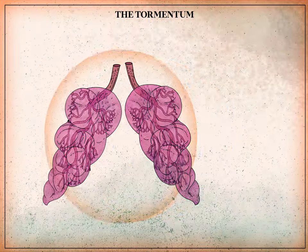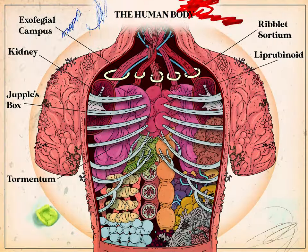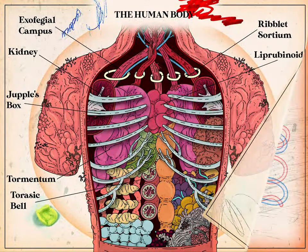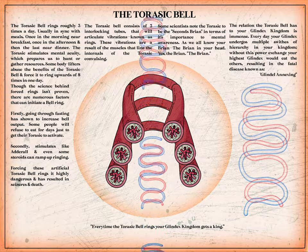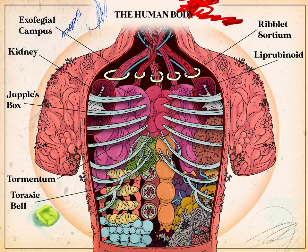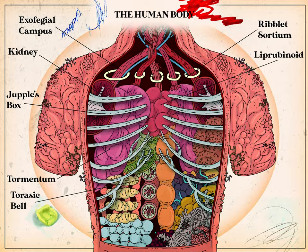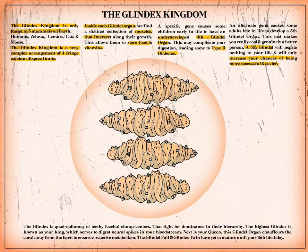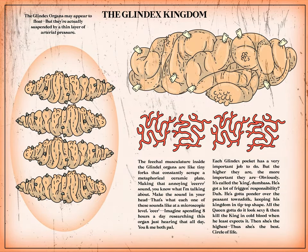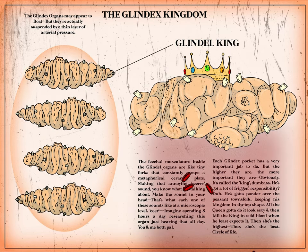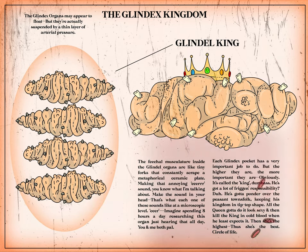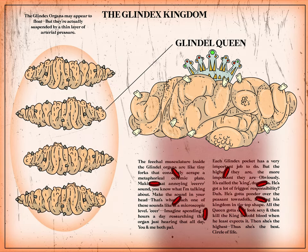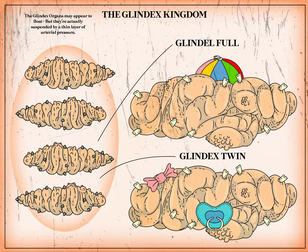The tormentum is a spiral lipless organ that relays aerobic contraction to your liprubinoid, a divergent suborgan distantly related to the thoracic bell. An easy trick to remember for the test: every time the thoracic bell rings, your glendex kingdom gets a king. The glendex is a quad qualum of teethy fetal clump centers that fight for dominance in their hierarchy. The highest glendex is your king, which digests neural spikes in your bloodstream. Next is your queen — the glendal organ chauffeurs the corral away from the barn for a reactive metabolism. The glendal full and the glendex twin have yet to mature until your 16th birthday.